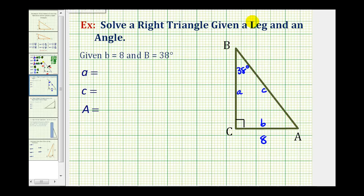Which means the measure of angle A must be equal to 90 degrees minus 38 degrees, which is equal to 52 degrees.